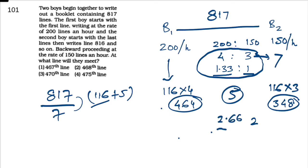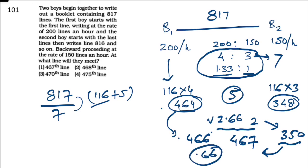Total complete pages: B1 completes 464 and B2 completes 350. Now the page number where they meet is 467, and the 0.66 part is the portion within that page.